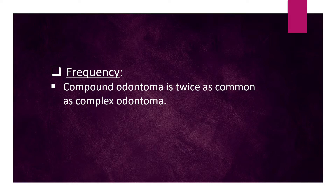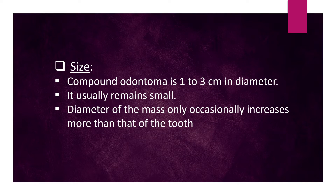Frequency: Compound odontoma is twice as common as complex odontoma. Size: Compound odontoma is 1 to 3 cm in diameter and usually remains small. The diameter of the mass only occasionally increases more than that of the tooth.